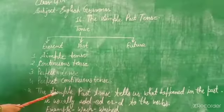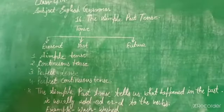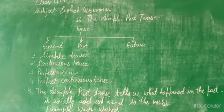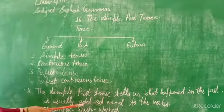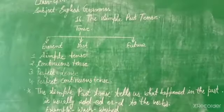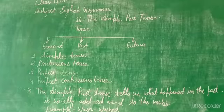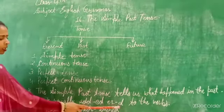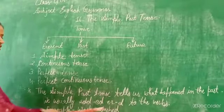The simple past tense tells us what happened in the past. We usually add 'ed' or 'd' to the verb. For example: wash, washed.